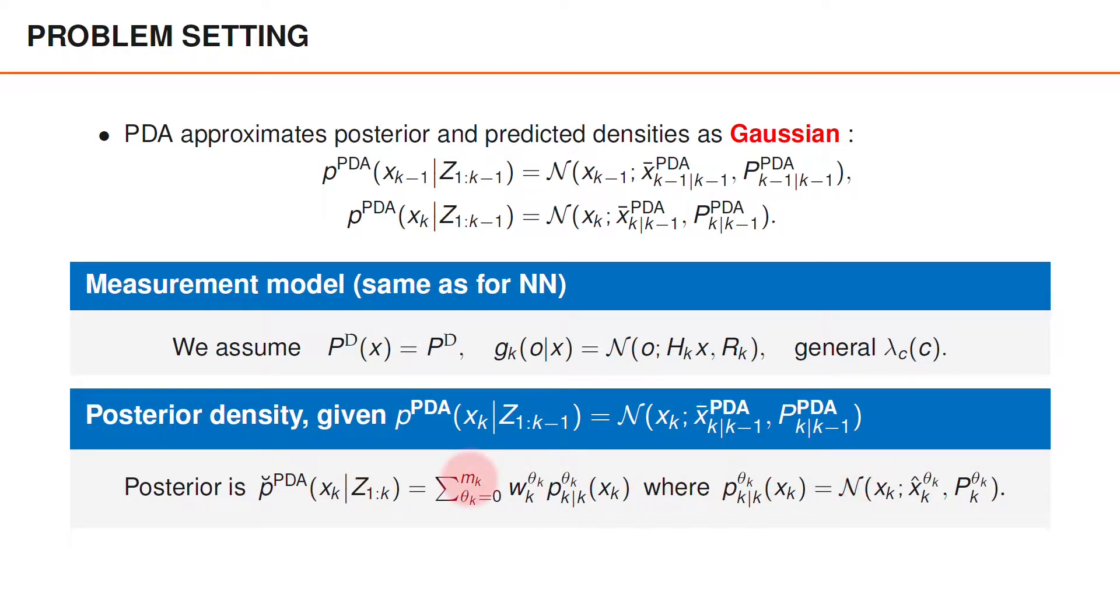is a Gaussian mixture with mk plus 1 terms. These weights and densities are computed in the same way as the weights and densities in p-breve for the nearest neighbor algorithm, but they generally take different values since they are computed based on a different predicted density. To clarify that they are different, we could have introduced a superindex PDA on Wθk and Pθk, but I've omitted that here to keep the notation simpler.